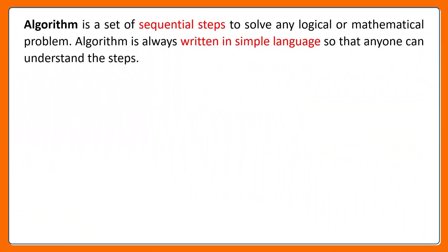Let us define algorithm in computer science. Algorithm is a set of sequential steps to solve any logical or mathematical problem. Remember, algorithm is always written in simple English-like language so that anyone can understand the steps.